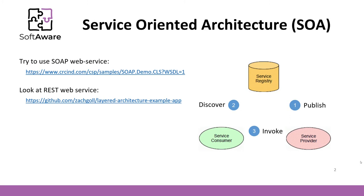It is intended to work like this. The service provider publishes its services in the service registry. The service consumer searches the service registry directory and discovers needed services. Now the service consumer is able to invoke specific services and acquire the results. On the other hand, we can make a shortcut if we know the service provider API or we develop that API ourselves.